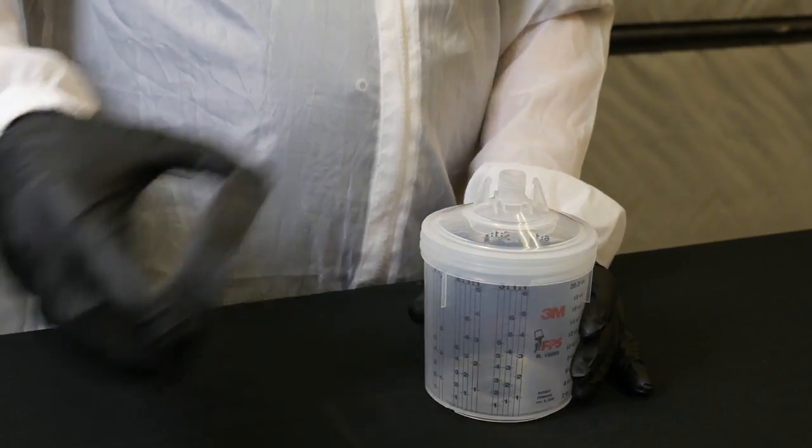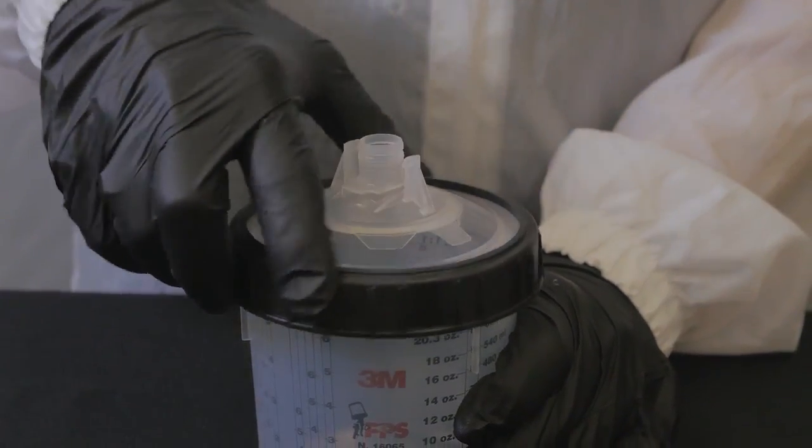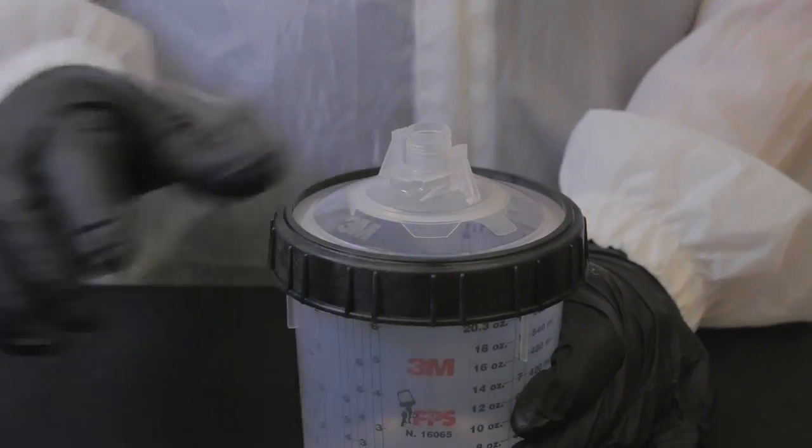Now attach the PPS collar to the hard cup. This will secure the lid and liner. Simply thread the collar onto the hard cup and tighten by hand until snug.